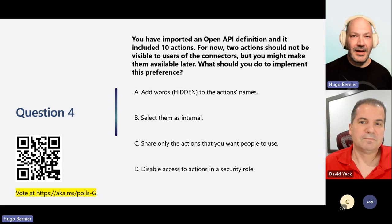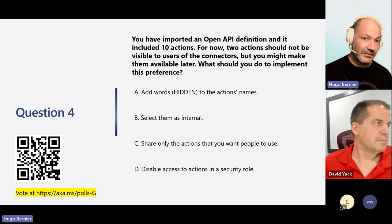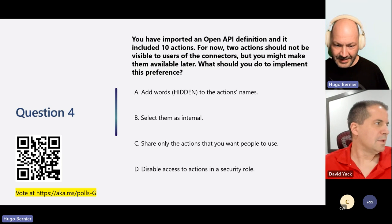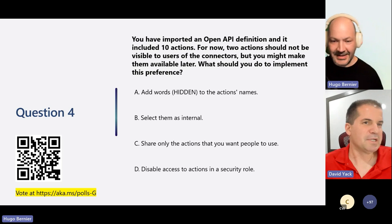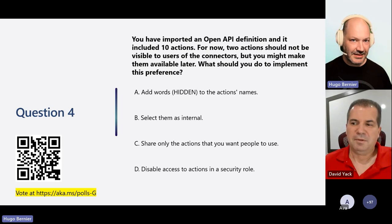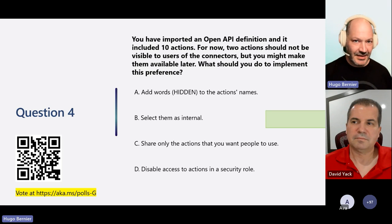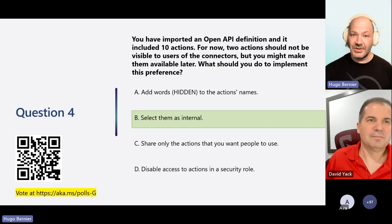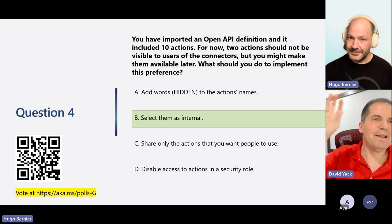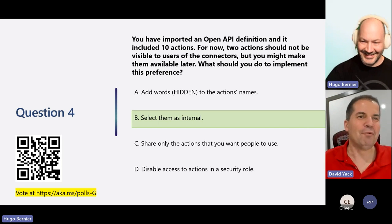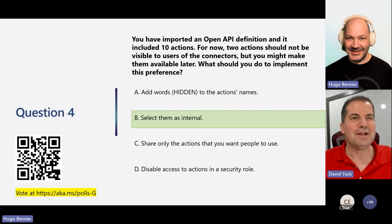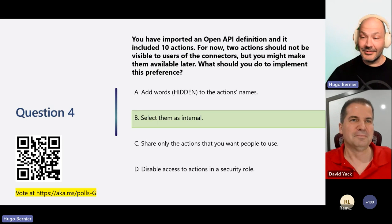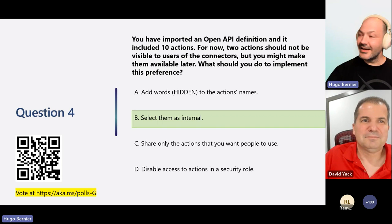Bonus question: you imported an OpenAPI definition with 10 actions, but two actions should not be visible to users for now, though you might make them available later. What should you do? The answer is B — select them as Internal. Selecting as internal prevents them from showing up to makers but retains their definition for future use. It's much cleaner than naming them 'hidden' or 'do not use' — if you do that, makers will want to use them even more.